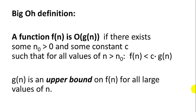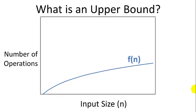And that may sound confusing, but I'm going to explain it in a little more detail with some pictures. So hold on. g of n is an upper bound on f of n for all large values of n. So that may make it a little easier to understand.